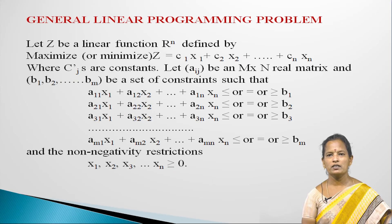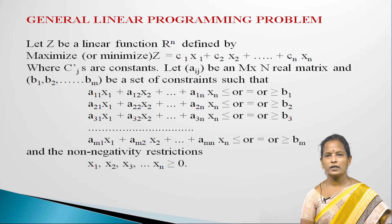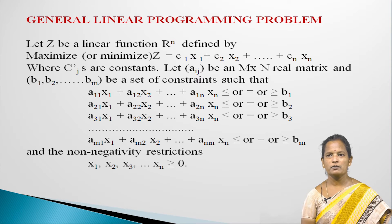Today we are going to see a topic on Canonical and Standard Form of General Linear Programming Problem. Let Z be a linear function on R power n defined by: maximize or minimize Z equal to c1x1 plus c2x2 plus ... cnxn, where cj's are constants.